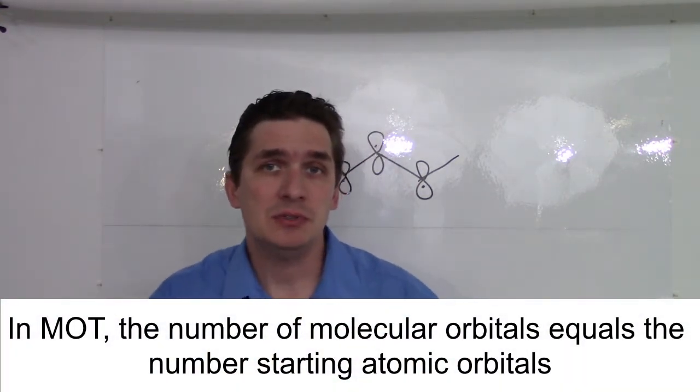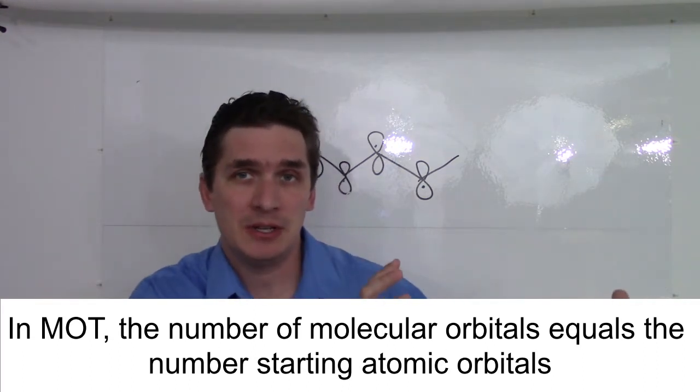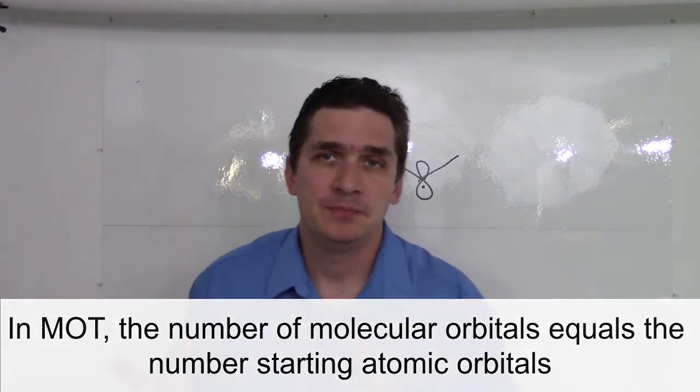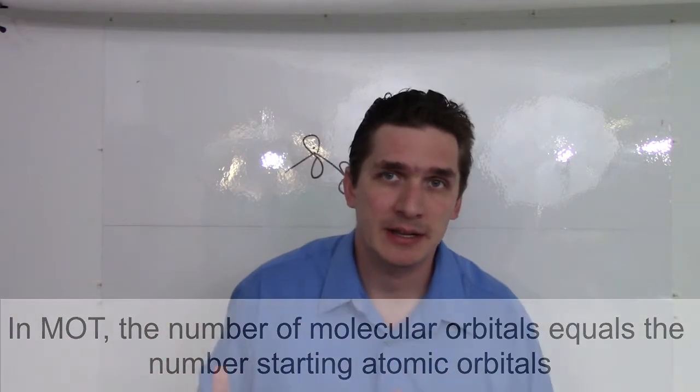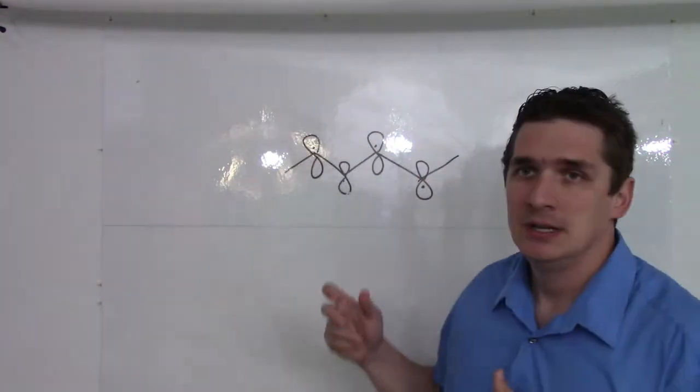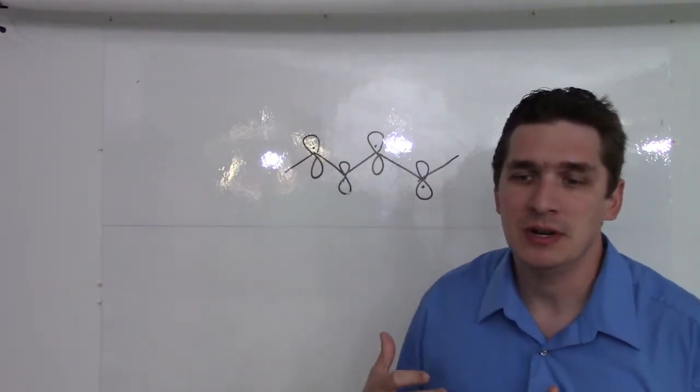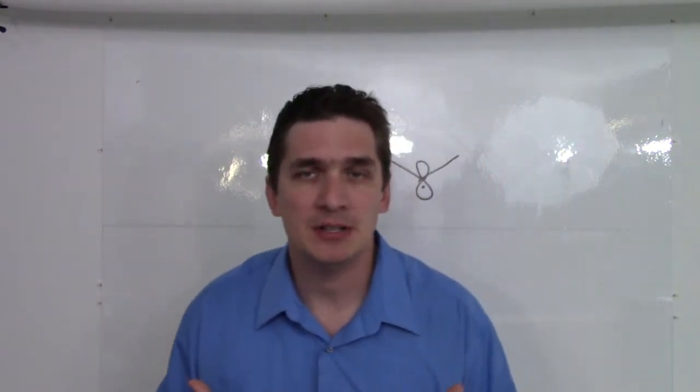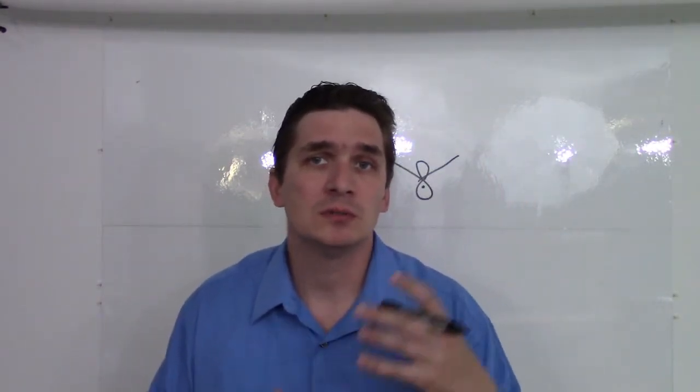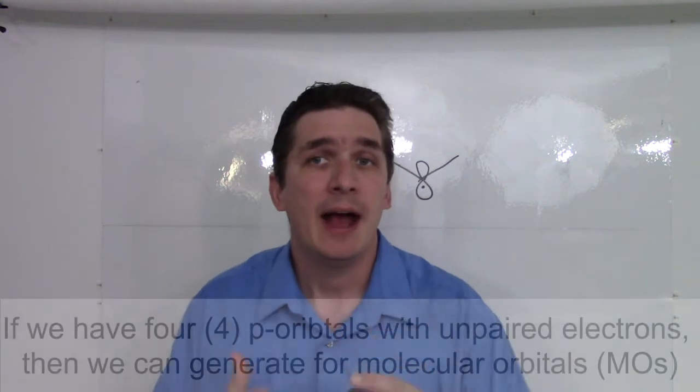So if we're going to draw from molecular orbital theory and bring it back to Lewis theory, if we've got four p orbitals that we're using to generate our diene system to create our pi bonds, then we have to generate four molecular orbitals out of them. How do we do it?